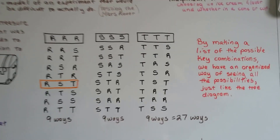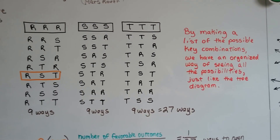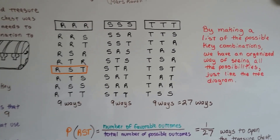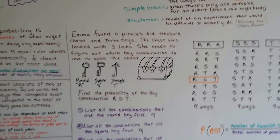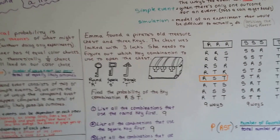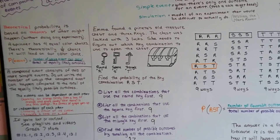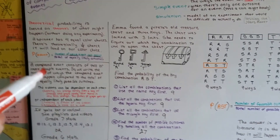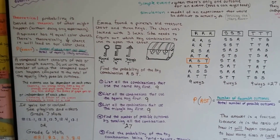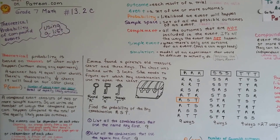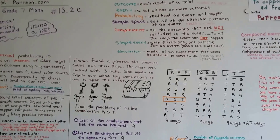By making a list of the possible key combinations, we have an organized way of seeing all the possibilities, just like we did with the tree diagram. That is finding theoretical probability of compound events by using a list. In my next video, I'll do a better comparison of dependent and independent compound events — that will be 13.2D. If you need to watch it, I'll see you there. Bye.